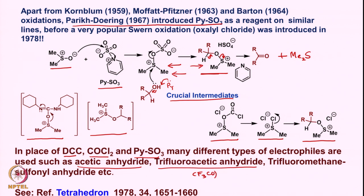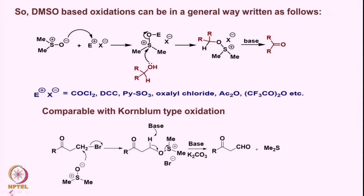So you have (CO)₂O, or CF₃SO₂O — these are the various kinds of electrophiles used. If you look carefully, what we have seen is that DMSO-based oxidations in general can be written like this: DMSO reacts with an electrophile — whether DCC, phosgene, pyridine·SO₃, or anything of that sort — giving activation of DMSO by the electrophile.